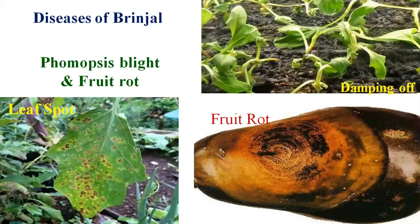The next important crop is brinjal. The first disease of brinjal is Phomopsis blight, also known as fruit rot. The causal organism is Phomopsis vexans. In the case of Phomopsis blight, three types of different symptoms can be seen, from the seedling stage all the way up to fruit formation.